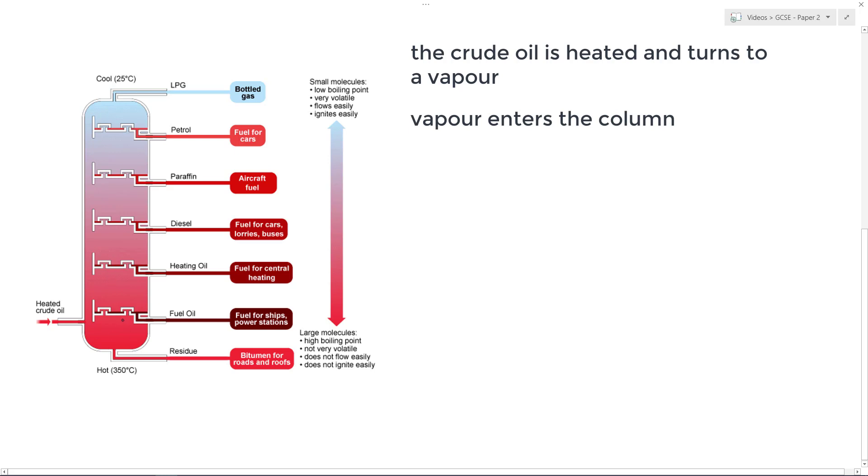So it enters at the bottom. Now the bottom of the fractionating column, you can just call it a column if you want, or the tower, is very hot. 350, 400, 450 degrees. You see various different numbers on different websites and in books and things. But it's very hot at the bottom. But, and a nice color thing here, what we find is we've got a temperature gradient. So although it's hot at the bottom, it's relatively cool at the top, and they're saying here about 25 degrees.